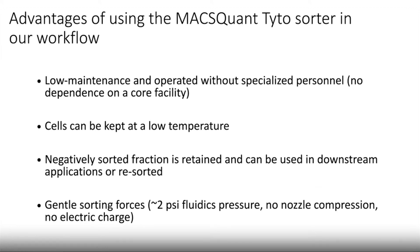Some things I quite like about the MACSQuant Tyto cell sorter and how we can use it in our workflow: it is a low-maintenance and easily operated instrument that does not require specially trained personnel or a core facility. We could implement it quite easily into our somewhat erratic workflow. The cells can be kept at a consistently low temperature throughout the entire sorting process — before, during, and after — which is important to minimize metabolism in our cells prior to transcriptomic analysis. Additionally, the negative fraction is retained and can be easily used in downstream applications, which we appreciate when working with hard-to-get tissue.